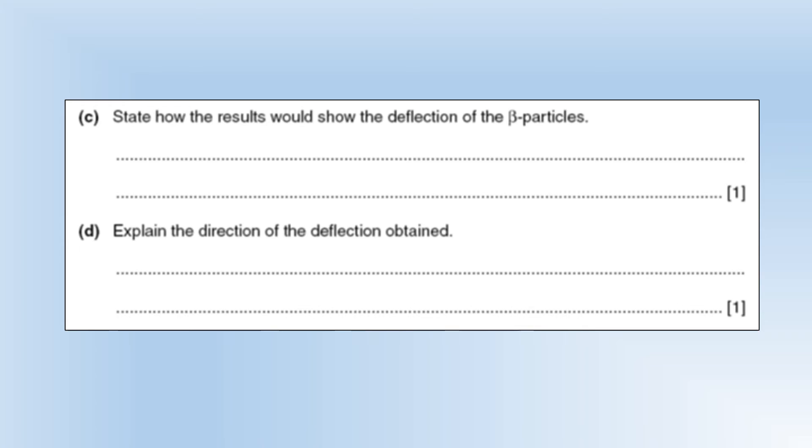So what results would we get? Well, we should get a high count rate near the positive plate, because, well, they're negatively charged, beta particles, so they should deflect to the positive plate.